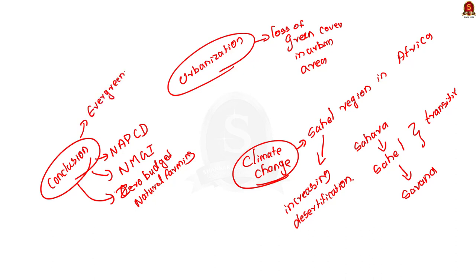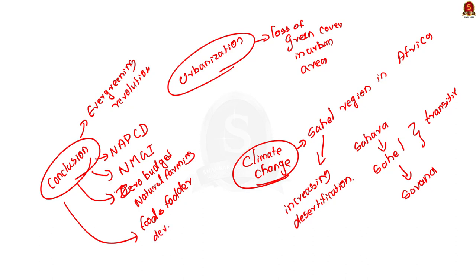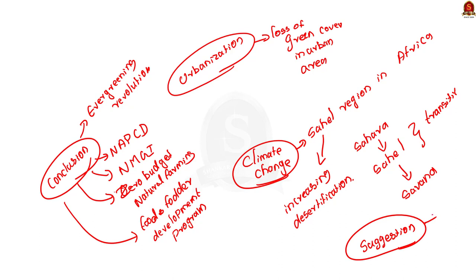We have addressed the question holistically. Today I discussed two questions which are mostly static. In future sessions, should I focus more on dynamic and current-affairs-related topics from previous years' mains questions, or give equal weightage to dynamic and static portions? Drop your suggestions in the comment section. Also post your answer versions — it will help in answer writing practice.